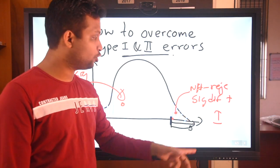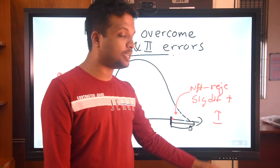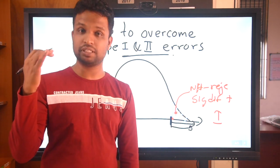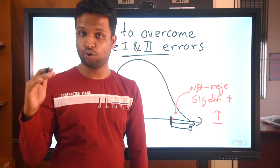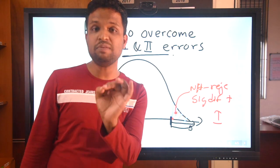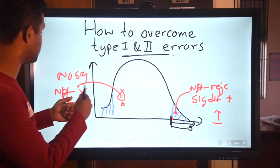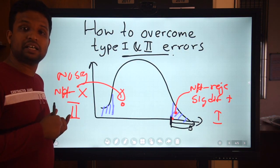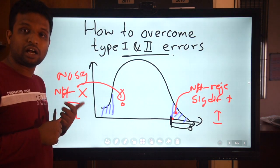Many people think that you can minimize Type 1 error by increasing the sample size. No — you can only minimize Type 2 error by increasing the sample size.